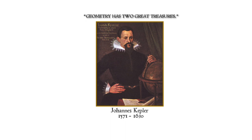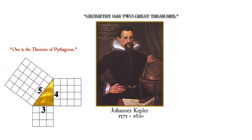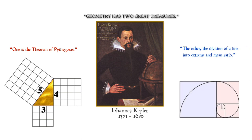He had famously stated, geometry has two great treasures. One is the theorem of Pythagoras, the other the division of a line into extreme and mean ratio. In other words, the golden ratio. But he couldn't figure out how they were connected.